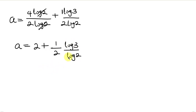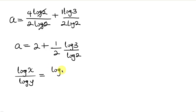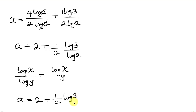Now there is a law of logarithm known as the change of base law, which says when I have log of x all over log of y, this can be written as log x base y. Applying this, our answer becomes a equal to 2 plus 1 over 2 times log 3 base 2. Now let's check if our answer is actually correct.